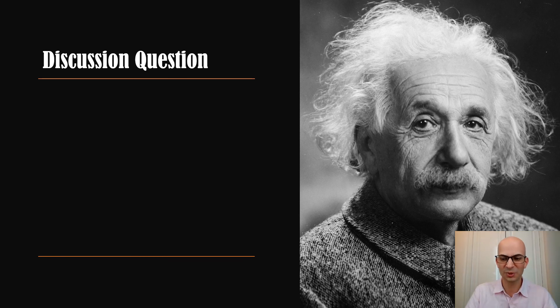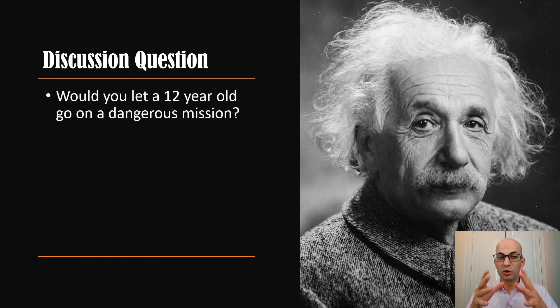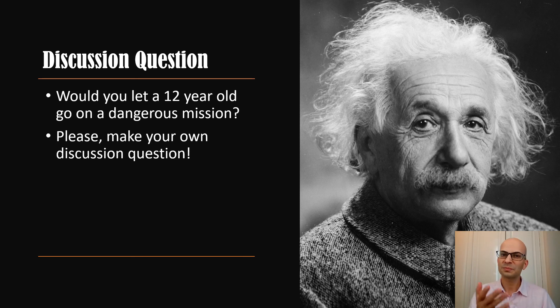All right, here we go. Discussion question. Would you let a 12-year-old go on a dangerous mission? Right, CIA agent Carter agrees and lets Charlie Thorne go if Dante can get her to do it. But would you? Would you allow that? Think of a 12-year-old going on a dangerous mission. Of course, please make your own discussion question.